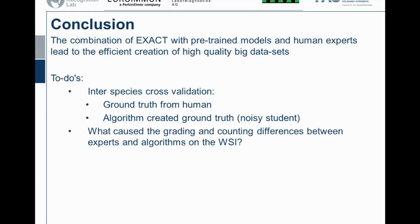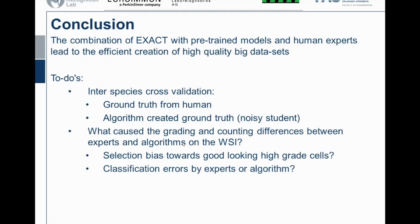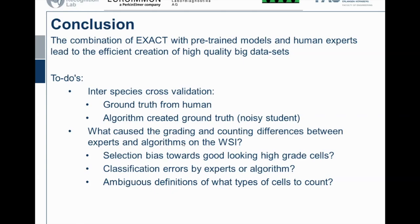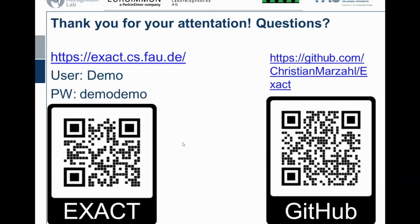We also want to look deeper into what causes grading and counting differences — why we have up to 20-40% fewer cells than last year for the same dataset. Is this a selection bias toward good-looking high-grade cells? Is it caused by classification errors? Or is the definition of the macrophages we are looking for not well-established, so what counts as a macrophage today may not tomorrow? We have this big dataset in progress and good ideas for the publication. If you have suggestions during this process, please write to me. And if you'd like to try EXACT, here is the link and a barcode. Thank you very much.